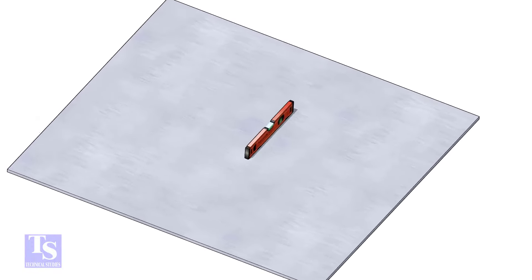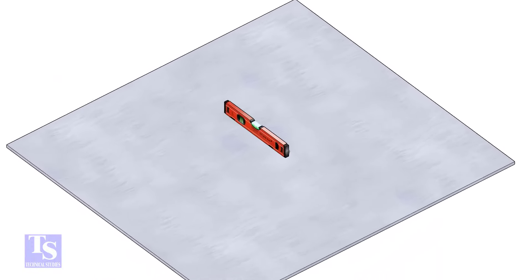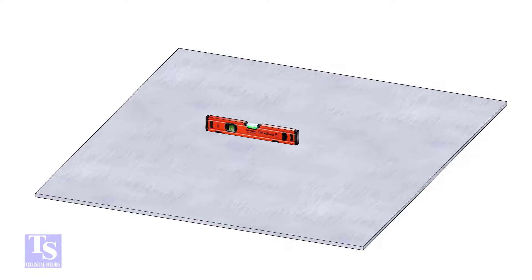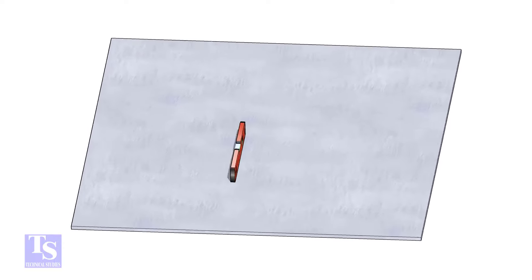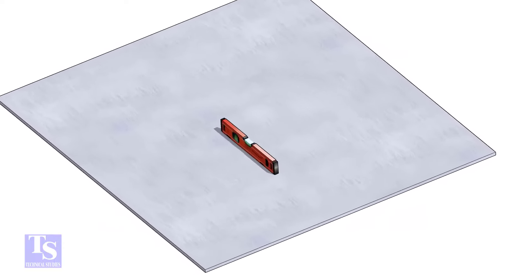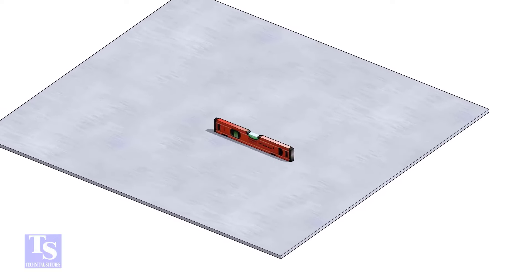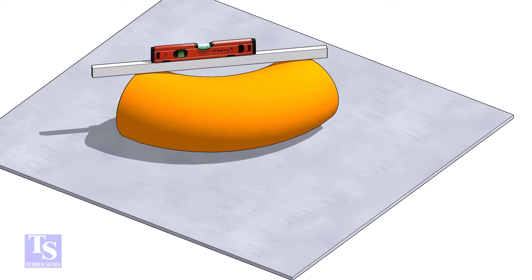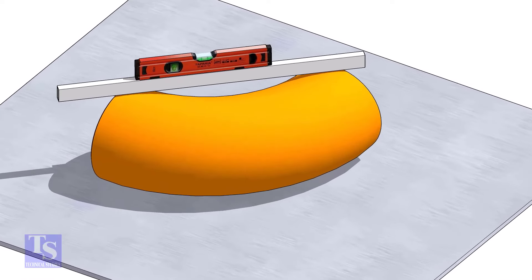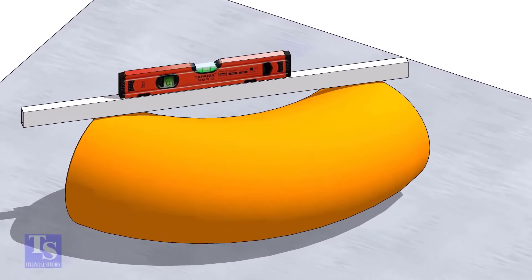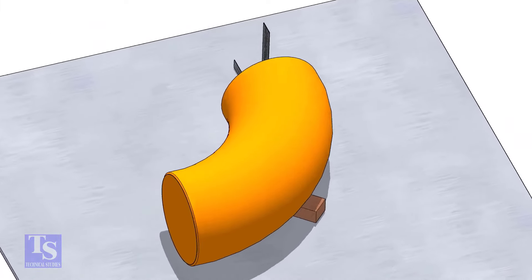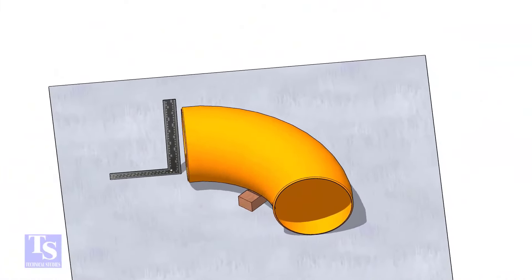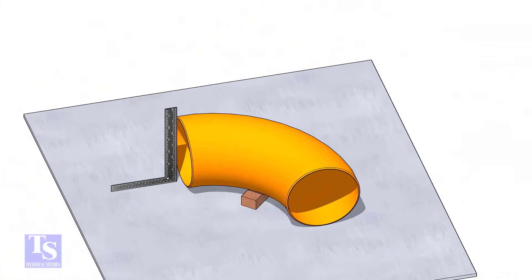Let us mark the center of the elbow. Choose a leveled plate and put the elbow on it. Check the level of the elbow. Check the squareness of the face of the elbow with the plate. If necessary, put some packing below as shown.